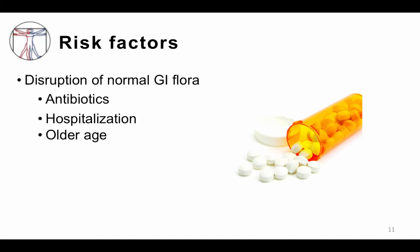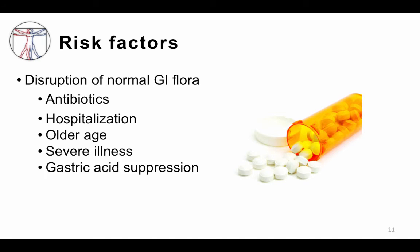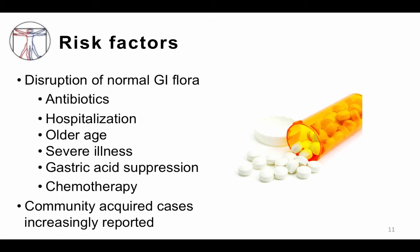Age is a major risk factor, as is severe illness. Gastric acid suppression in the form of proton pump inhibitors and H2 blockers, which for a while everybody seemed to have been on for acid reflux, is also associated with C. diff, presumably because gastric acid is part of our normal host defenses, particularly for pathogens acquired through the fecal-oral route. Chemotherapy can not only cause immunosuppression, but may also disrupt gut flora in many cases. And unfortunately, community-acquired cases without classic risk factors are increasingly reported.